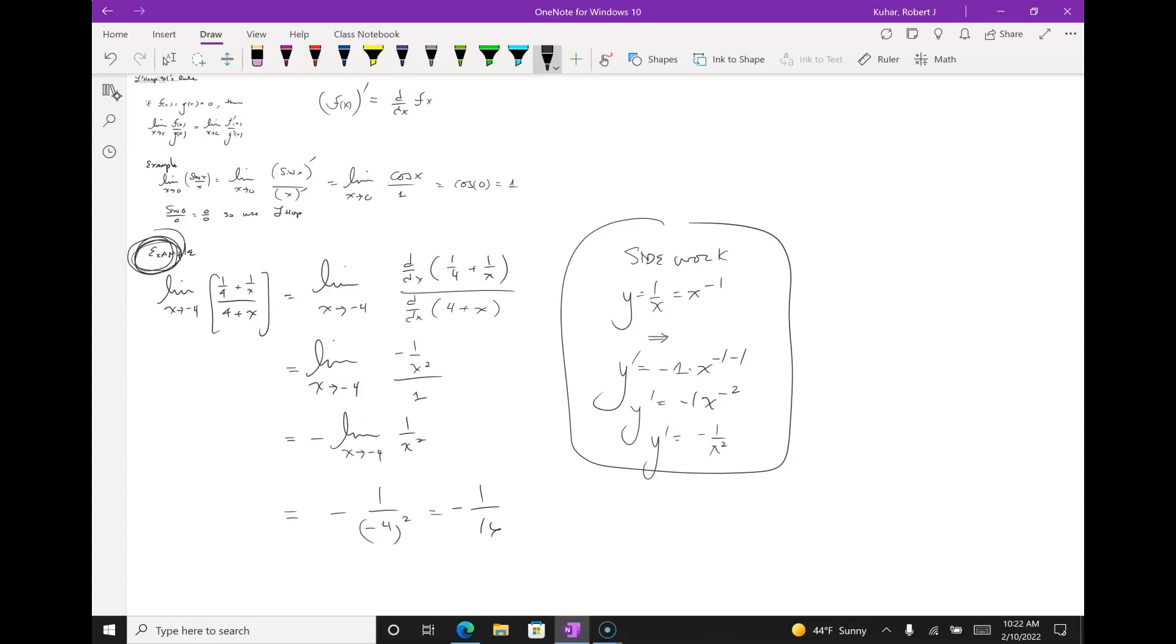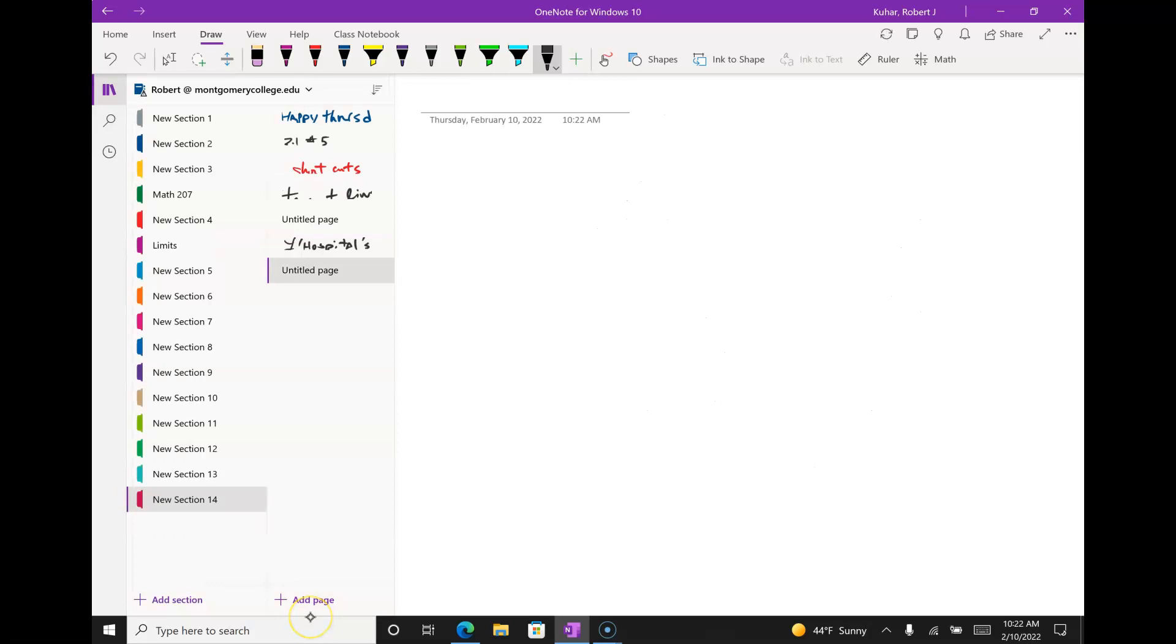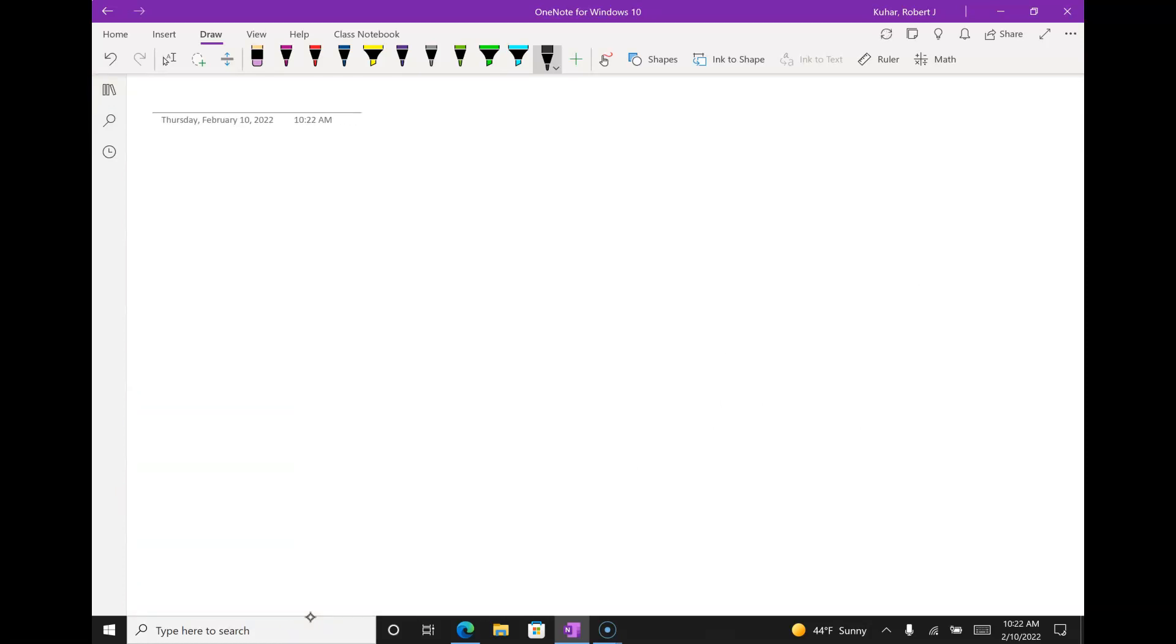Let's see if I can prove L'Hopital's rule. Give me a little bit of leeway here. So don't start writing yet. I have to think a little bit. If f of c equals g of c equals zero, then the limit of f of x over g of x is equal to the limit of f prime of x over g prime of x.